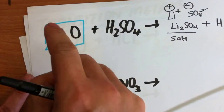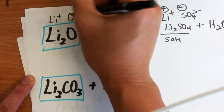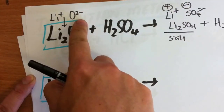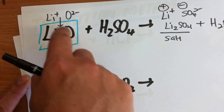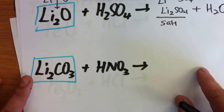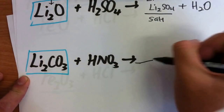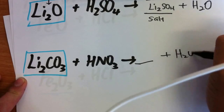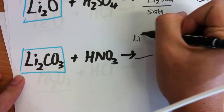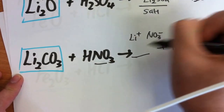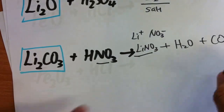Why do people get confused with the Li2? It's because of Li2O — Li is 1 plus and O is 2 minus, that's how you get the Li2. This is from the formula of the ions itself, not from the balancing of the equation. Next, Li2CO3 is a carbonate plus acid, giving three things: salt plus water plus CO2. Li plus NO3 minus gives LiNO3, ratio 1 to 1.